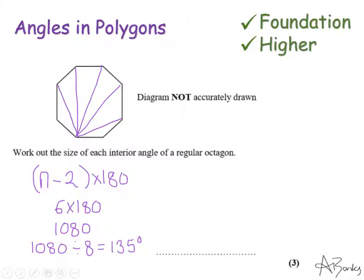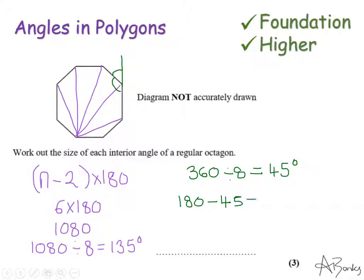The second method is often quicker: first find the exterior angle. Exterior angles add up to 360 degrees, and a regular octagon has eight of them, so 360 ÷ 8 = 45 degrees. An exterior angle and an interior angle lie on a straight line, and angles on a straight line add up to 180, so 180 − 45 = 135 degrees. Either method gives the correct answer of 135 degrees.